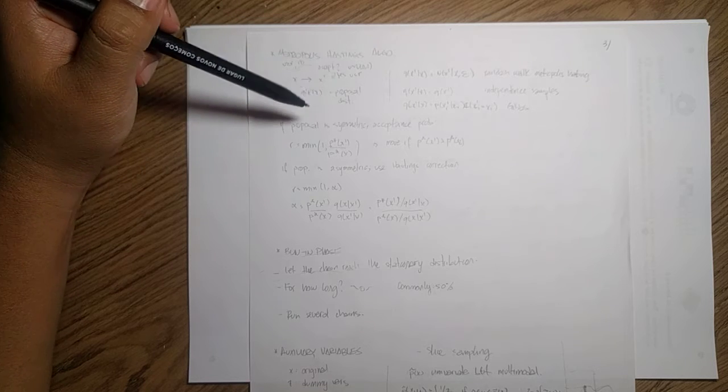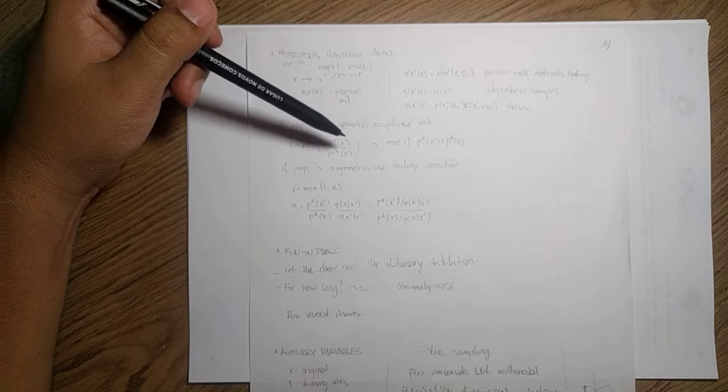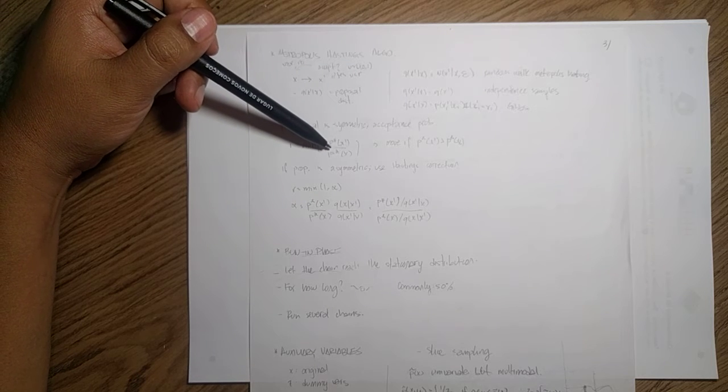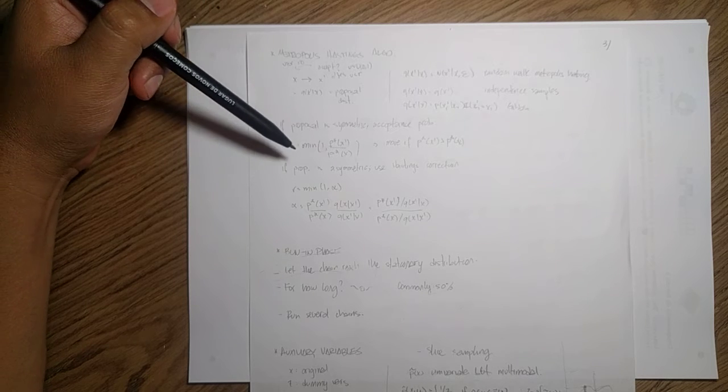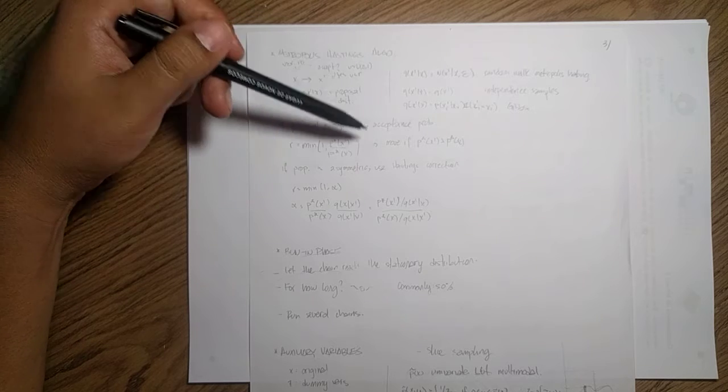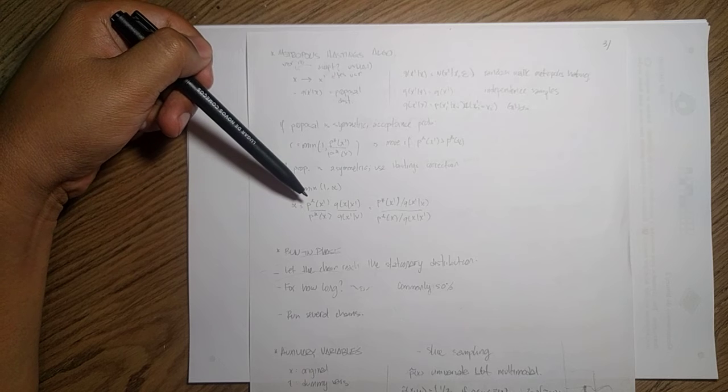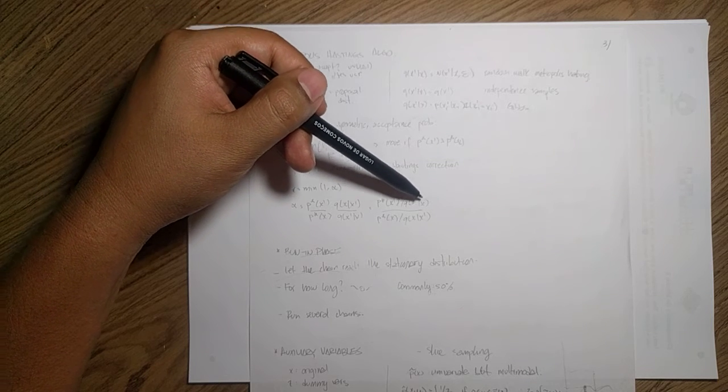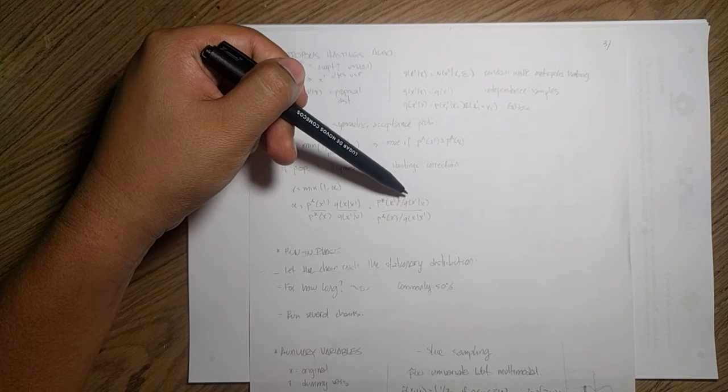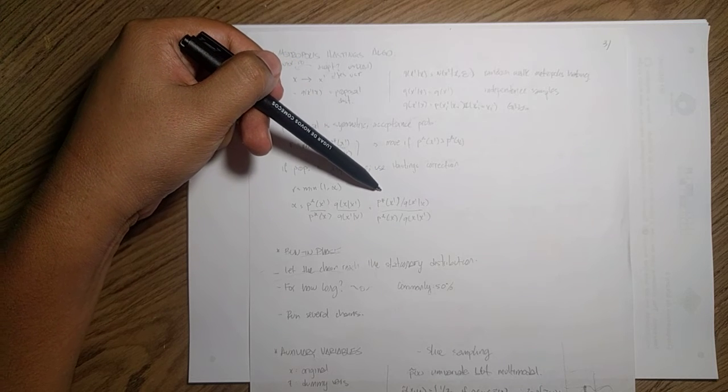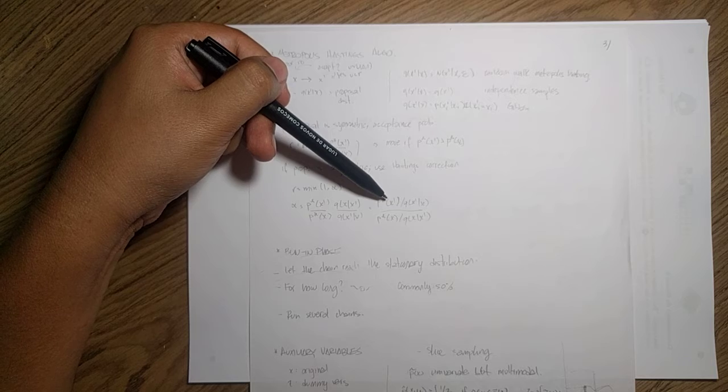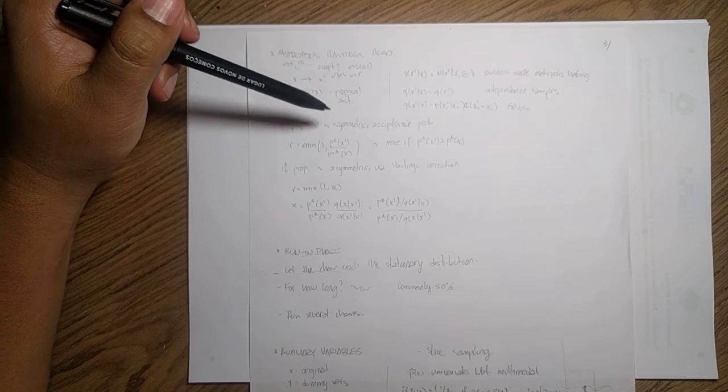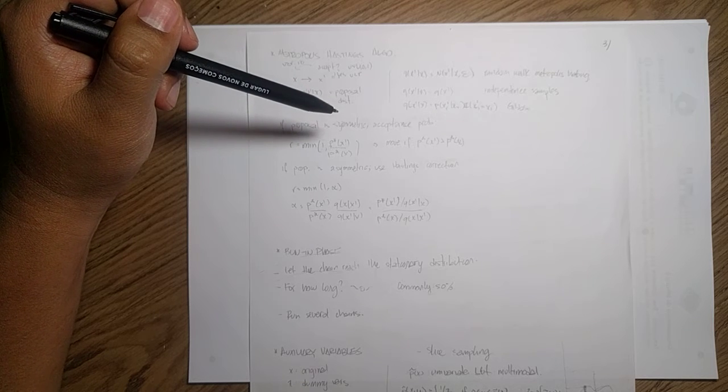So how do we compute this acceptance probability? If we have a symmetric proposal, that means that it is the same from X to X' and vice versa, then we will take the minimum value between one and the ratio of the next state over the current one. If it is an asymmetric one, we need to do some correction we just call the Hastings correction. And what we do is to take the ratio still between both next state and current state, but we correct it by dividing with respect to our proposal. So we use the probability of the proposal. So it is the ratio between the probability of the distribution that we want to over the proposal. So that is what we call the correction. And this idea is like a mixture of the algorithms that we saw before.